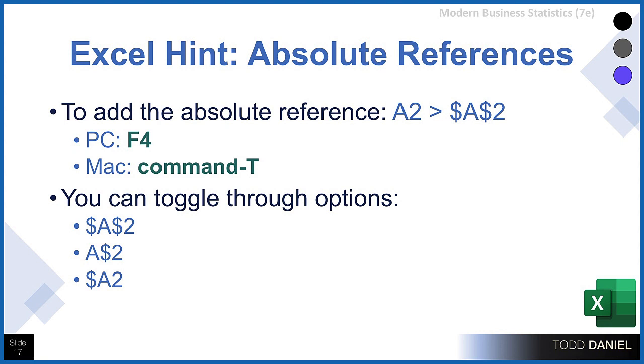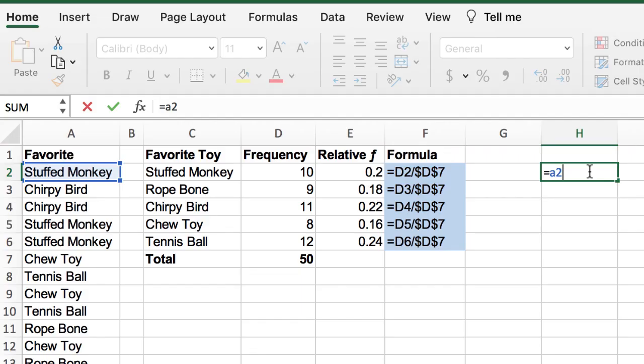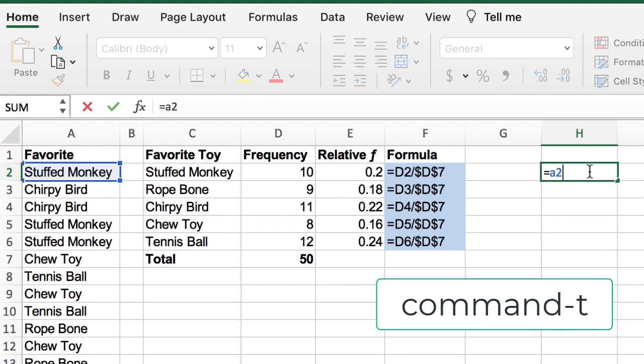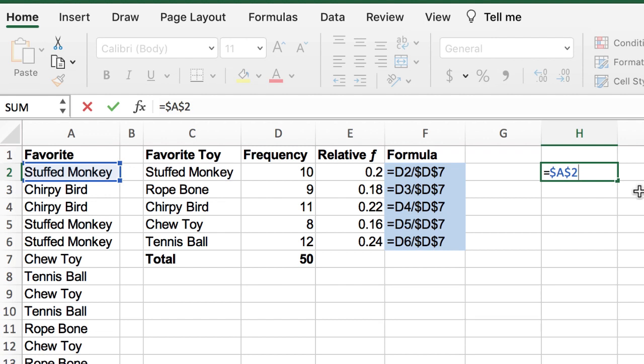To add that absolute reference, to add those dollar signs, there are a couple shortcuts you want to know about. This makes it really simple. Let's say you type A2, but you want to have a dollar sign in front of the A and the 2. If you are using a PC, you just type the A2 and then hit F4 on your keyboard. If you are using a Mac, you type the A2 and use Command T. It will add those dollar signs. By default, it adds the dollar signs in front of the A and the 2. But if you wanted only in front of A or only in front of 2, you could continue to press either F4 or Command T to toggle through those options.